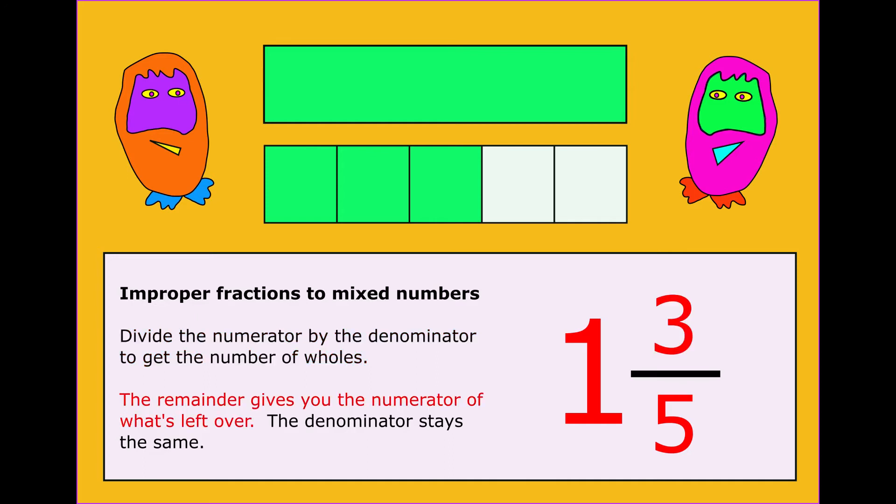The remainder gives you the numerator of what's left over. We had eight fifths. Five of them became one whole, and the extra three becomes our proper fraction of three fifths.